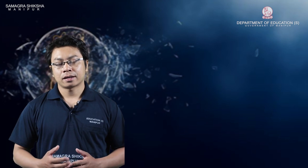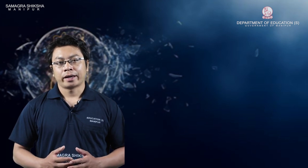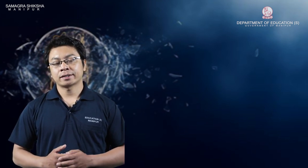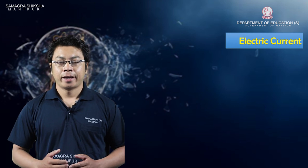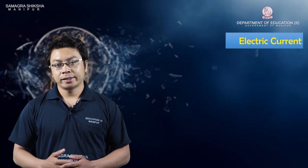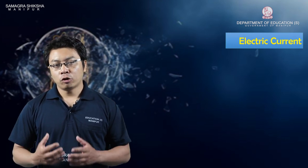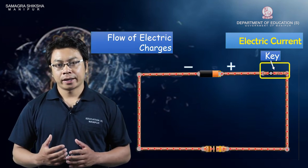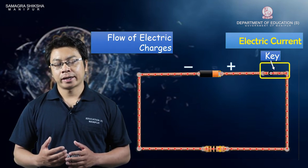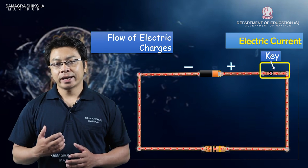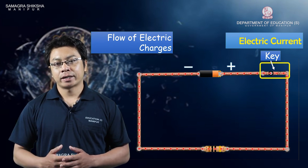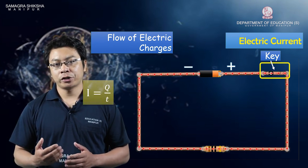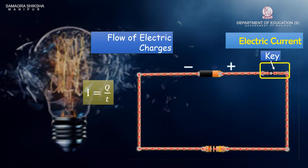In the last class, there was a discussion about electric current and potential difference. What is the electric current? Mathematically, current I is equal to charge Q divided by time T. So I = Q/T.